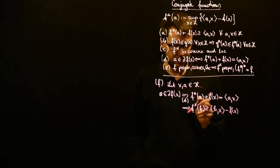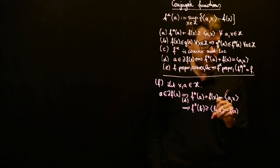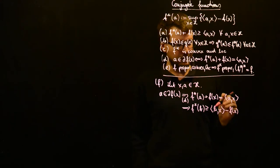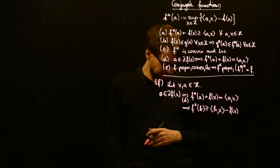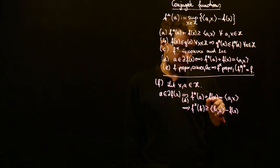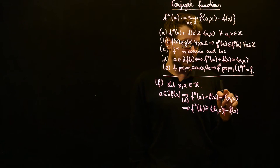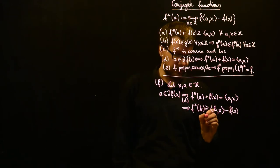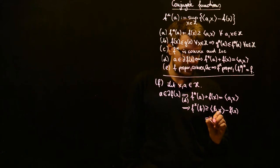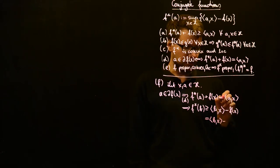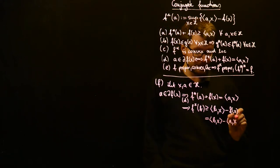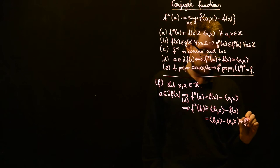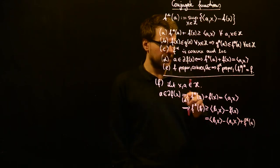Since f-star of b is the supremum over these things, maybe there exists a different point such that this quantity is even bigger. Now we know that f of x equals the inner product a·x minus f-star of a, so this equals b·x minus, and now we use our expression for f of x: minus the inner product of a with x plus f-star of a — and this is exactly the equality here.